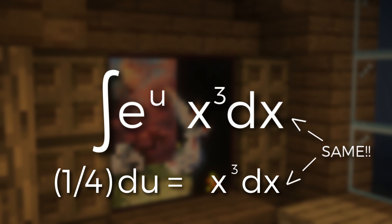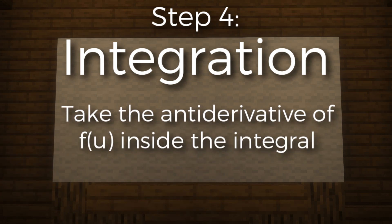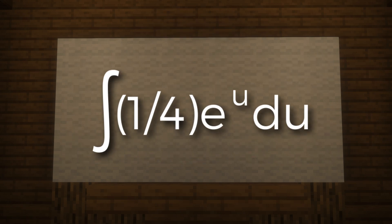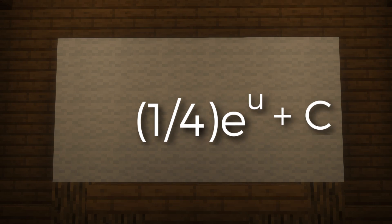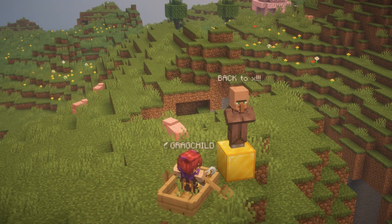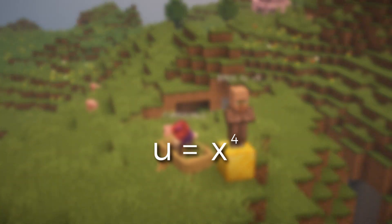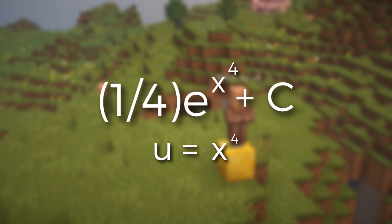Now it is exactly the same as what was in the integral, and we can replace it in the equation. For our fourth step, we have integration — this is the easiest step. All you have to do is take the antiderivative. So we have the integral of 1/4 e to the u du. Since the derivative of e to the x is e to the x, the antiderivative is also the same, and we get 1/4 e to the u plus C. Now for the last step, we substitute the x variables back in. Using u equals x to the 4 from earlier, we substitute that into all u variables and get a final answer of 1/4 times e to the x to the 4th power plus C. And that is our final answer.